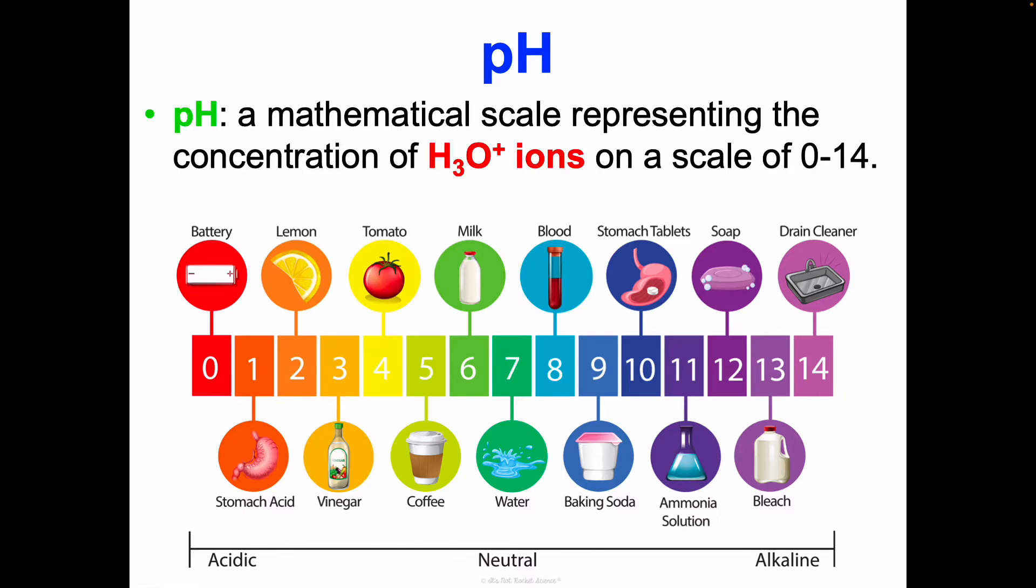pH is a mathematical scale representing the concentration of hydronium ions on a scale of 0 to 14, and it's a logarithm, so it goes differently from what you would anticipate. The greater the hydronium ion concentration, the lower the pH. Looking at this scale of 0 to 14, neutral is 7, right in the middle here. Anything above 7 is basic, or alkaline is another word used. Anything below 7 is acidic.